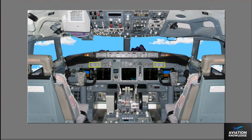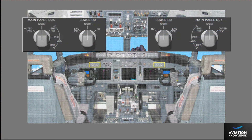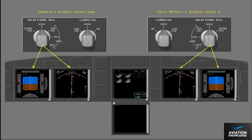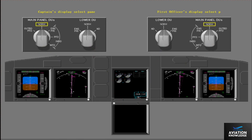The display select panels are on the instrument panel above the pilot's display units. Each display select panel has two selectors that permit the pilots to control the displays on the related outboard and inboard DUs, and to control the display on the lower DU. The main panel DU's selector has five positions: Normal, outboard primary flight display or outboard PFD, inboard engine primary, inboard PFD, and multi-function display or MFD.